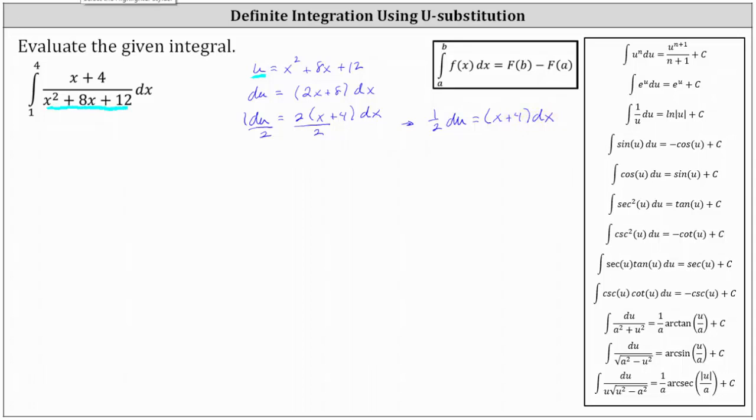which gives us 1 half du equals the quantity x plus 4 times dx, which is good news. We can now substitute 1 half du for the quantity x plus 4 dx.